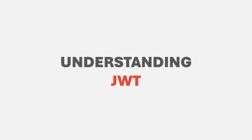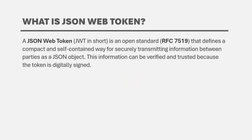This token will be used as an identity for the logged-in user. A JSON Web Token is an open standard that defines a compact and self-contained way for securely transmitting information between parties as a JSON object. This information can be verified and trusted because the token is digitally signed. JSON Web Tokens are a stateless solution for authentication — no session state is stored on the server — and that is perfect for RESTful APIs like the one we are building with NestJS, which should always be stateless.